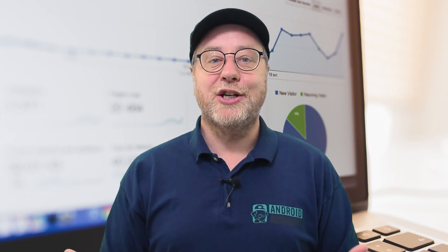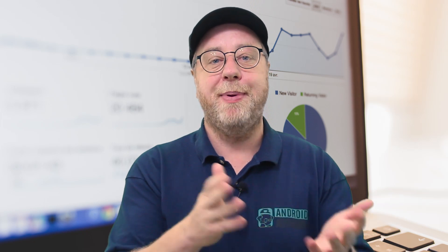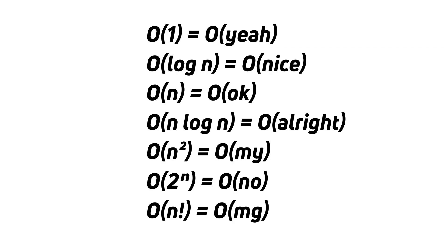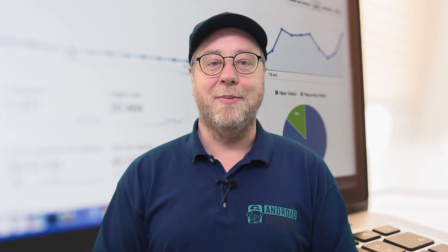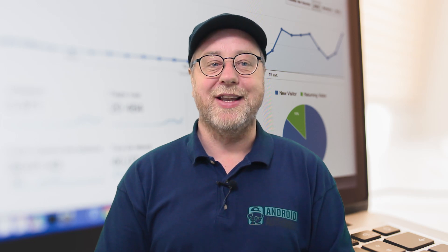Now let's turn to the nerdy joke: the alternative Big O notation. O of 1 becomes 'Oh yeah!' because that's a really good algorithm. O of log N becomes 'Oh nice, that will work.' O of N is 'Oh okay.' O of N log N is 'Oh, alright.' O of N squared becomes 'Oh oh my.' O of 2 to the power of N becomes 'Oh no.' And O of N factorial becomes 'Oh my gosh,' because you definitely don't want an algorithm that runs like that.